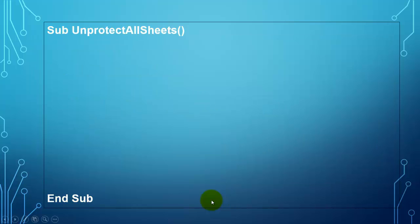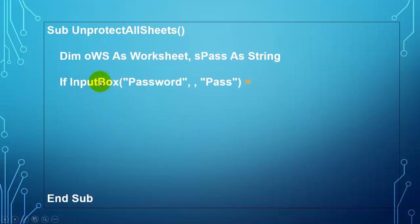Then we create a similar one. But this one is going to unprotect all the sheets. So we declare again an oWS one. We declare our own password variable of the string type. We ask the user first, do you know the password? I put already by default the password in there. You should not do that in real life, of course. If that is PASS, then I let you go.